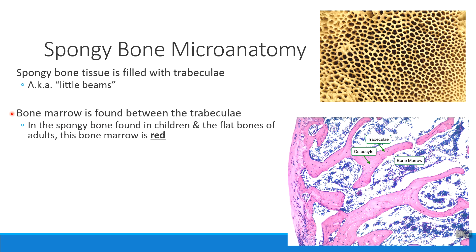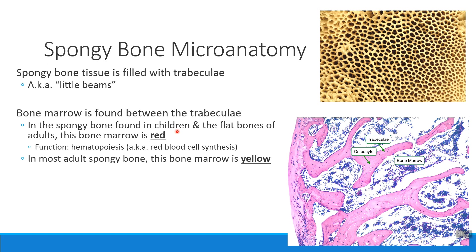Remember that in children, and also in the flat bones of adults, bone marrow will typically be red. Red bone marrow is the kind that helps us make new red blood cells. In children, all of their spongy bone has red bone marrow in between. In adults, bone marrow transitions into yellow bone marrow, where we store triglycerides — our stored form of energy.